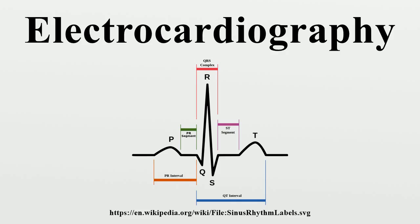During each heartbeat, a healthy heart will have an orderly progression of depolarization that starts with pacemaker cells in the sinoatrial node, spreads out through the atrium, passes through the atrioventricular node down into the bundle of His and into the Purkinje fibers, spreading down and to the left throughout the ventricles. This orderly pattern of depolarization gives rise to the characteristic ECG tracing.